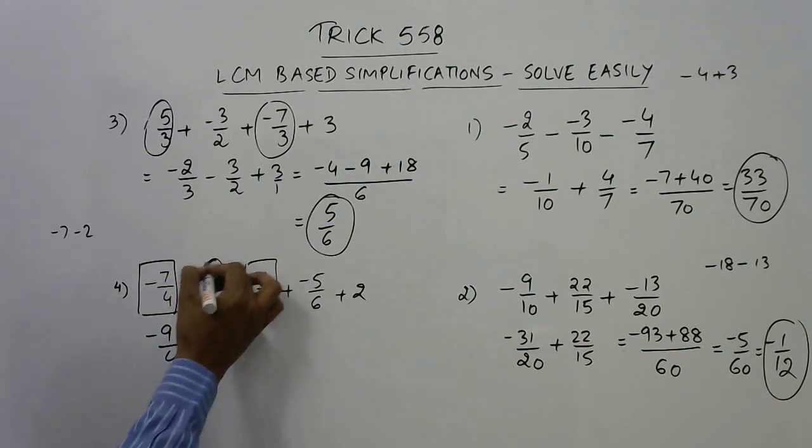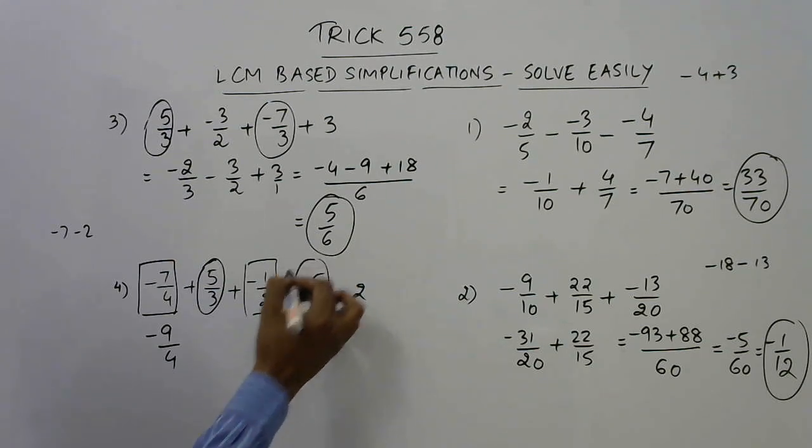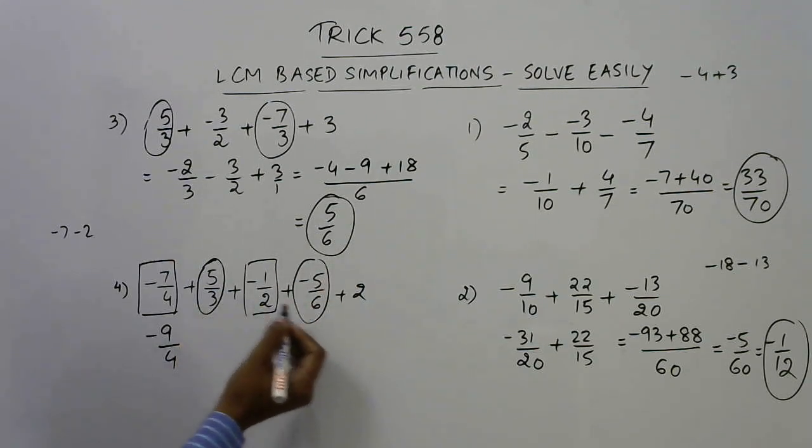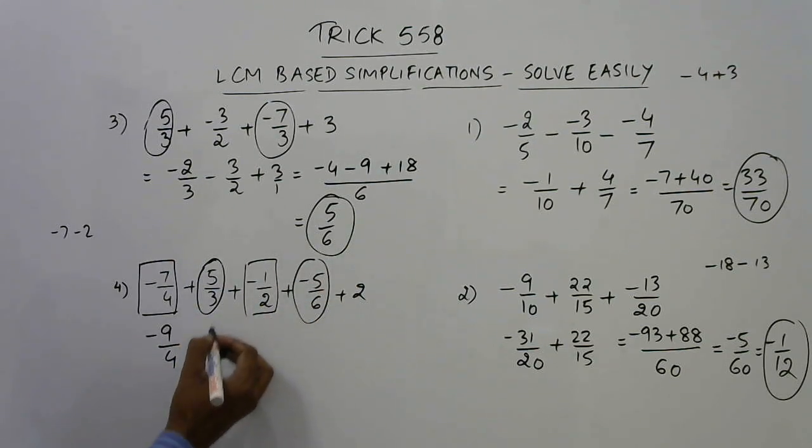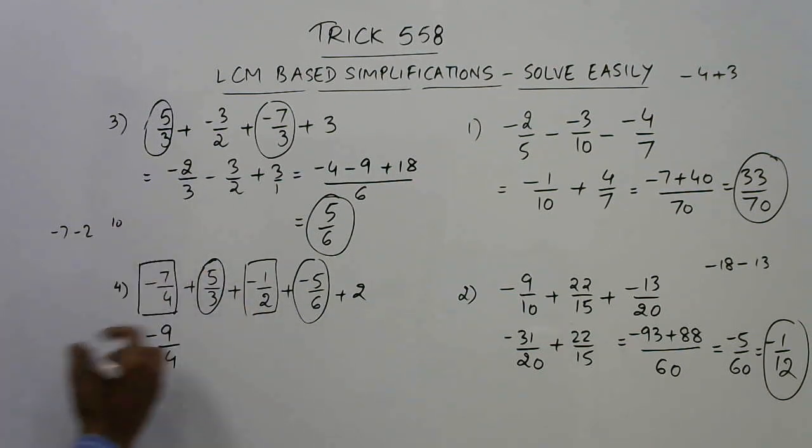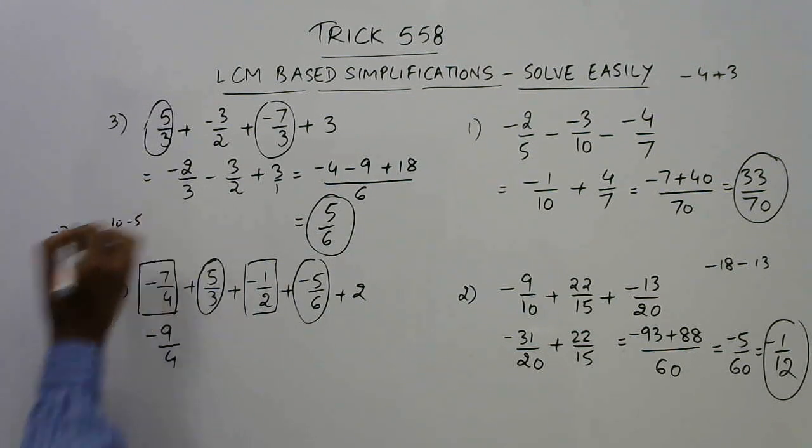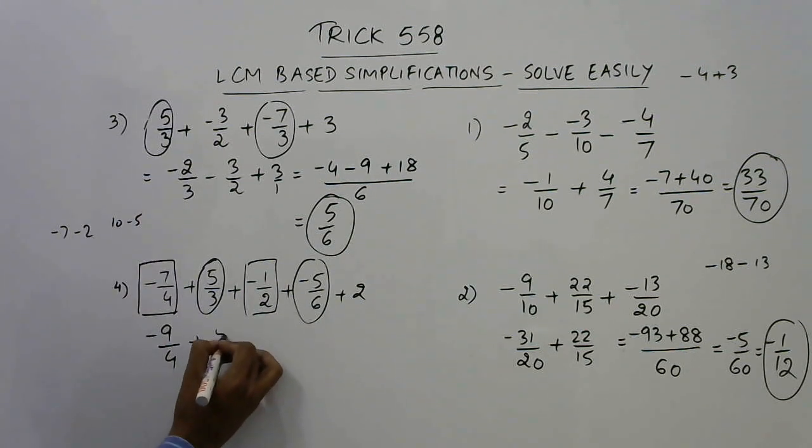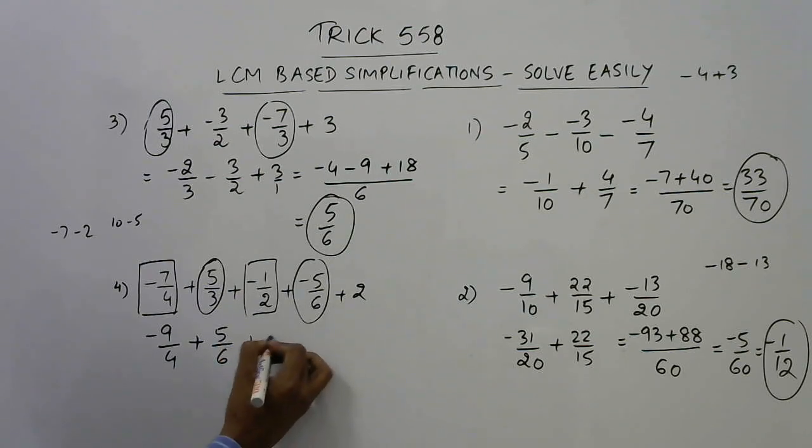Now, consider the two encircled ones, 3 and 6. 3 divides 6 exactly. So, 3 into 2 is 6, multiply this by 3 by 3. So, you get 10 and minus 5 is 5, plus 5 upon 6 and finally, you have plus 2 here.